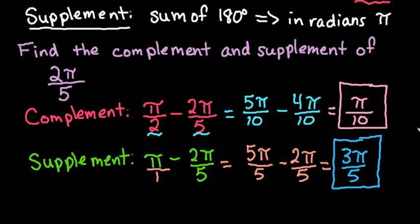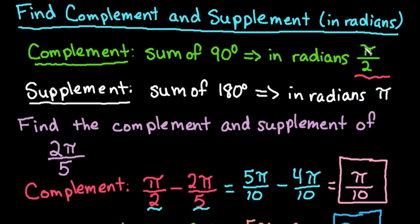So just remember it's very simple. If you are dealing with radians, if you're trying to find the complement, the sum is π over 2. If you're trying to find the supplement, the sum is π, and you just subtract the given values from that angle.